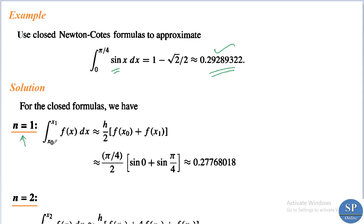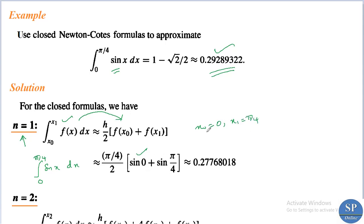When n = 1, the integral from x_0 to x_1 of f(x) dx ≈ (h/2)[f(x_0) + f(x_1)] — this is the trapezoidal rule without the error term. In this case, the integral from 0 to π/4 of sin(x) dx, with f(x) = sin(x), x_0 = 0, x_1 = π/4, and h = π/4, gives approximately (π/4)/2 · [sin(0) + sin(π/4)] ≈ 0.27768018.